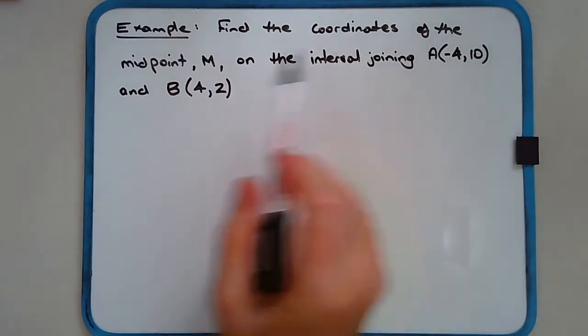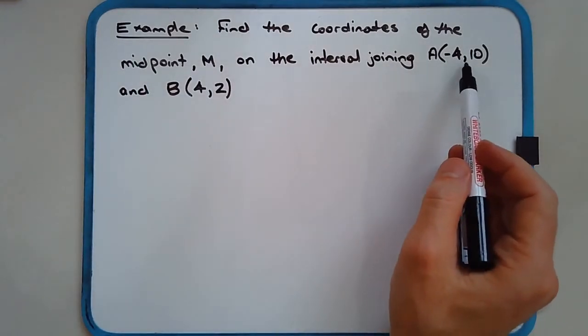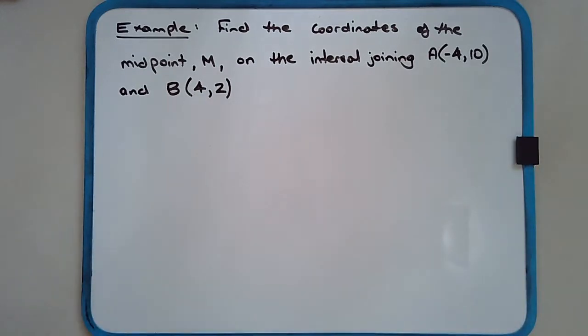Find the coordinates of the midpoint M on the interval joining A(-4, 10) and B(4, 2).